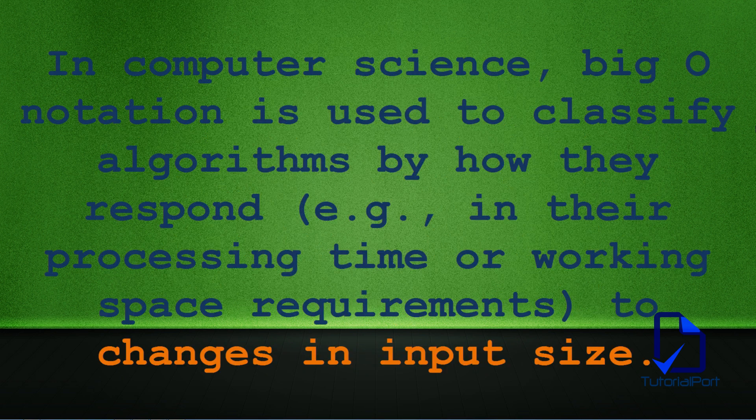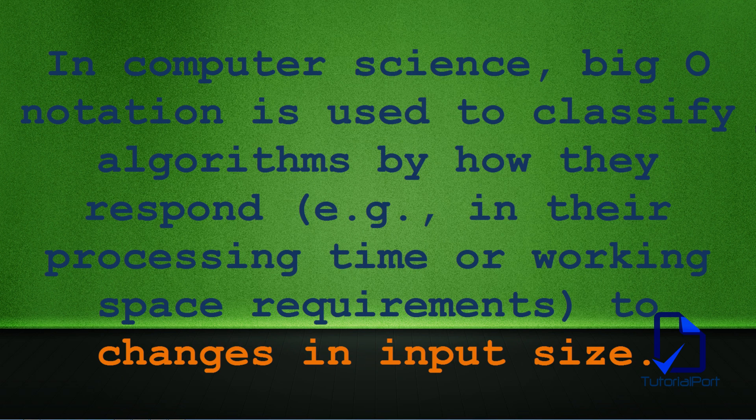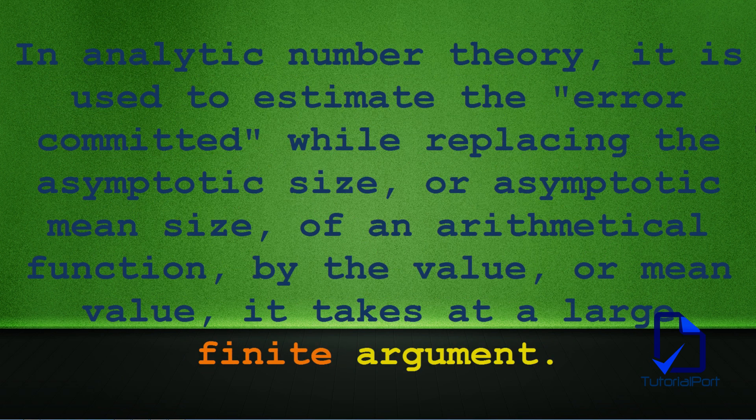In computer science, Big O notation is used to classify algorithms by how they respond, for example, in the processing time or working space requirements to changes in input size.